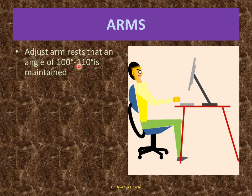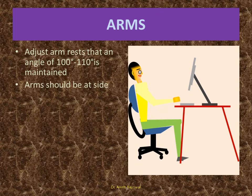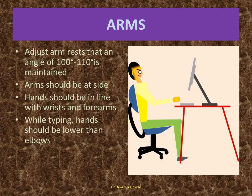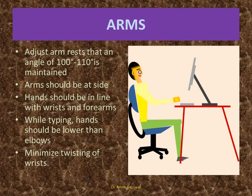Arms: Adjust armrests so an angle of 100 to 110 degrees is maintained. You can see hands should be in line with the wrists and forearms. While typing, hands should be lower than the elbows. Minimize twisting of wrists.